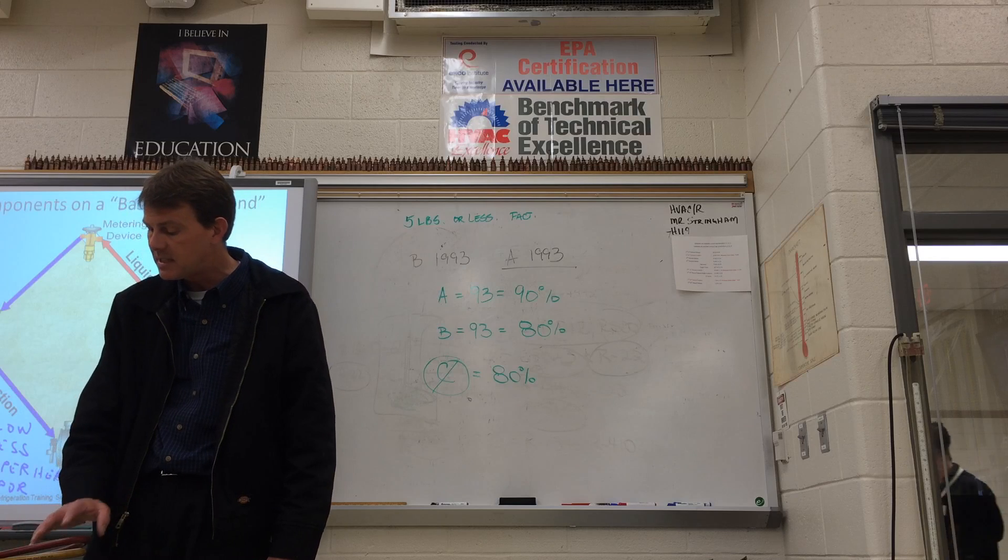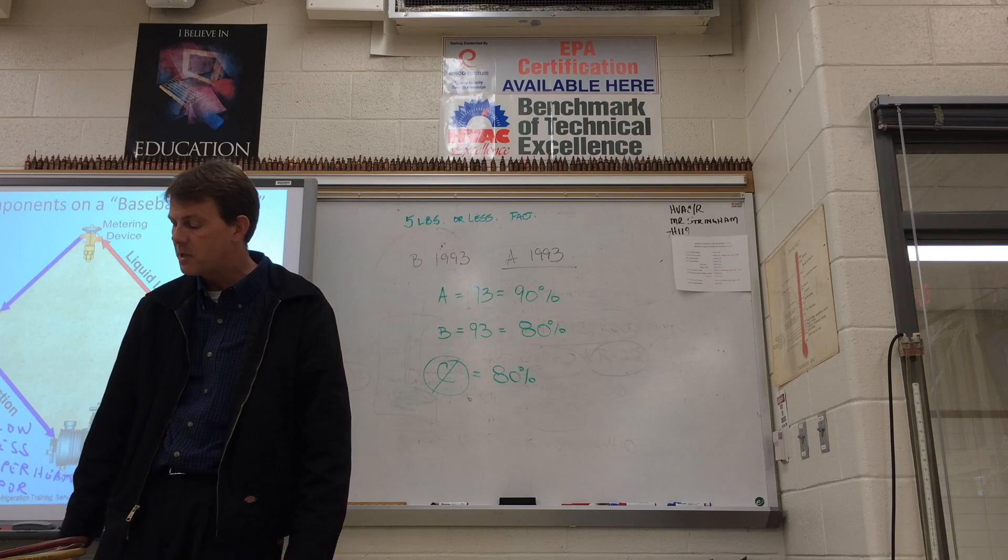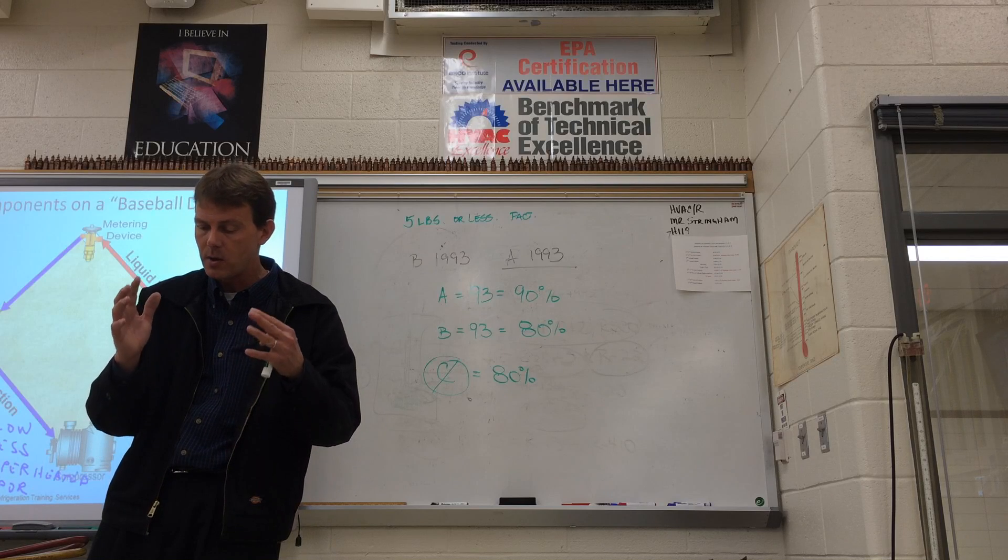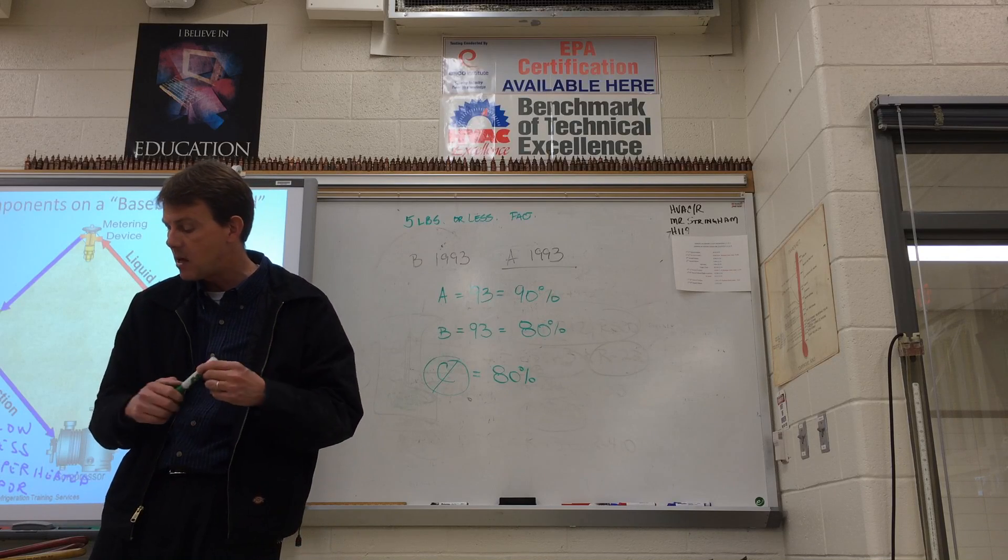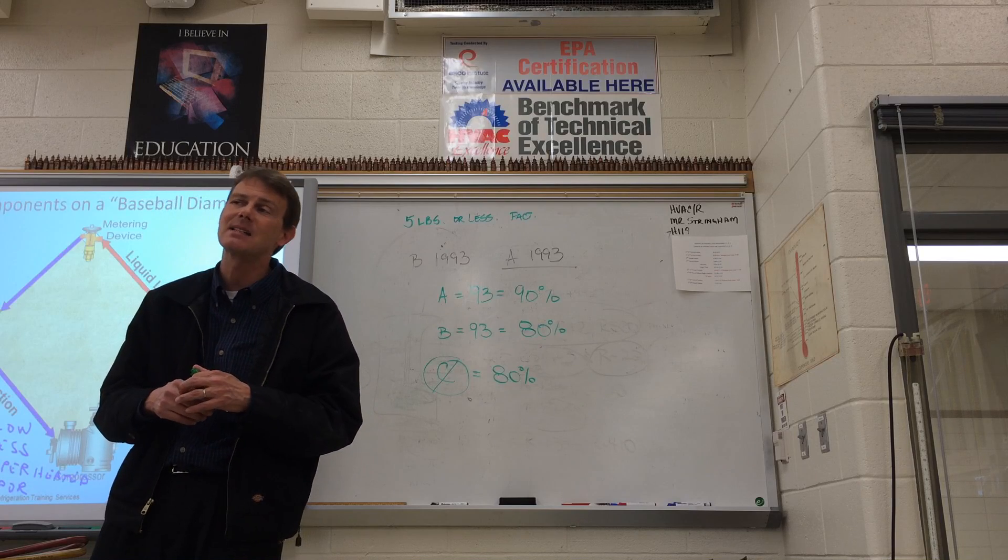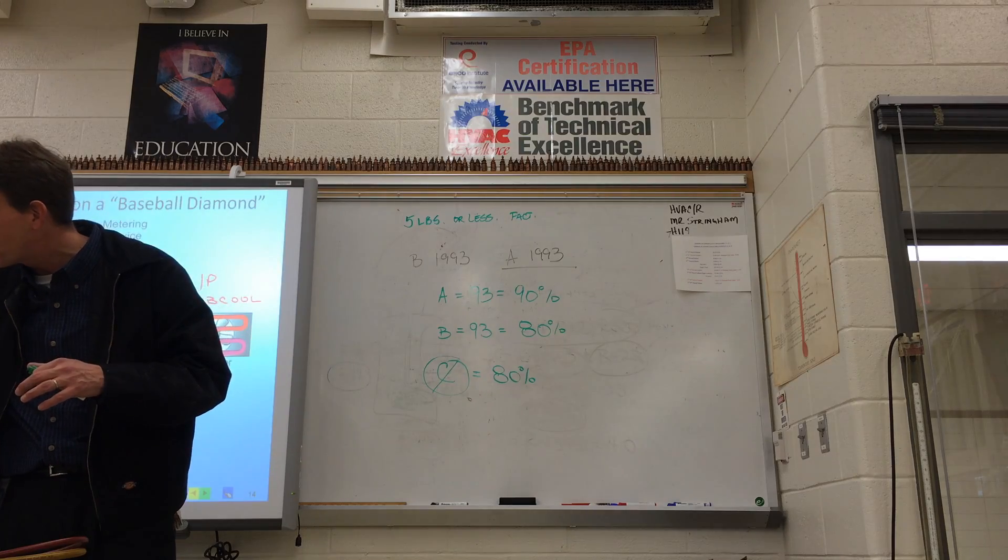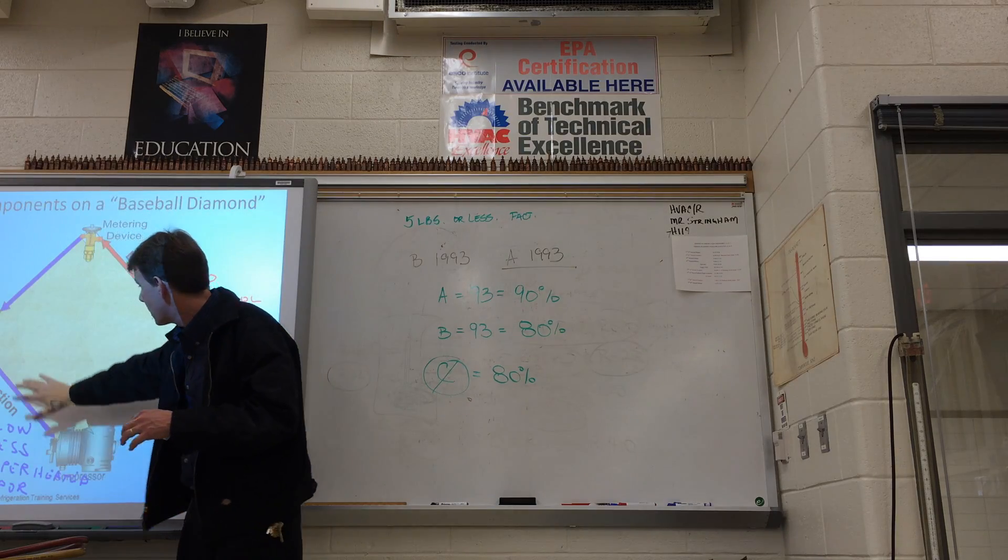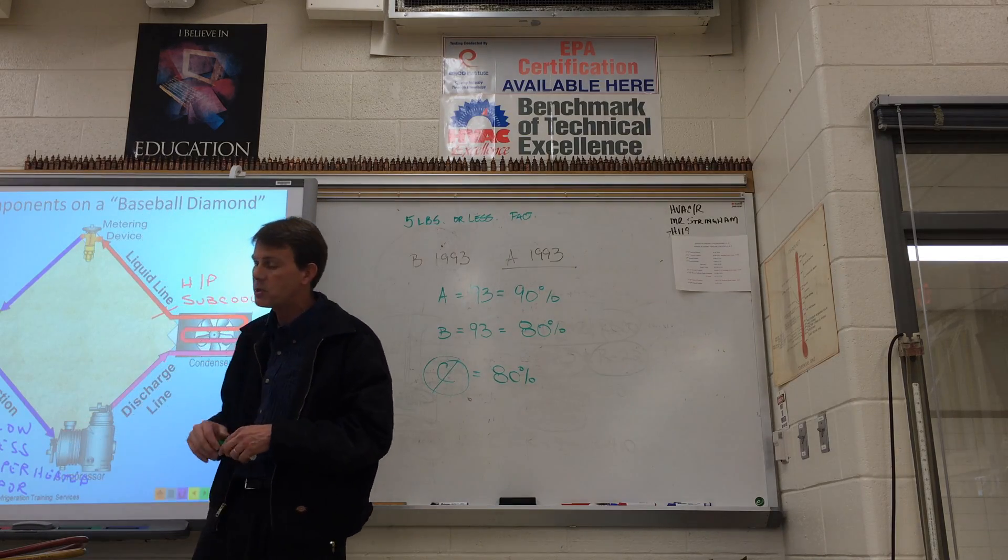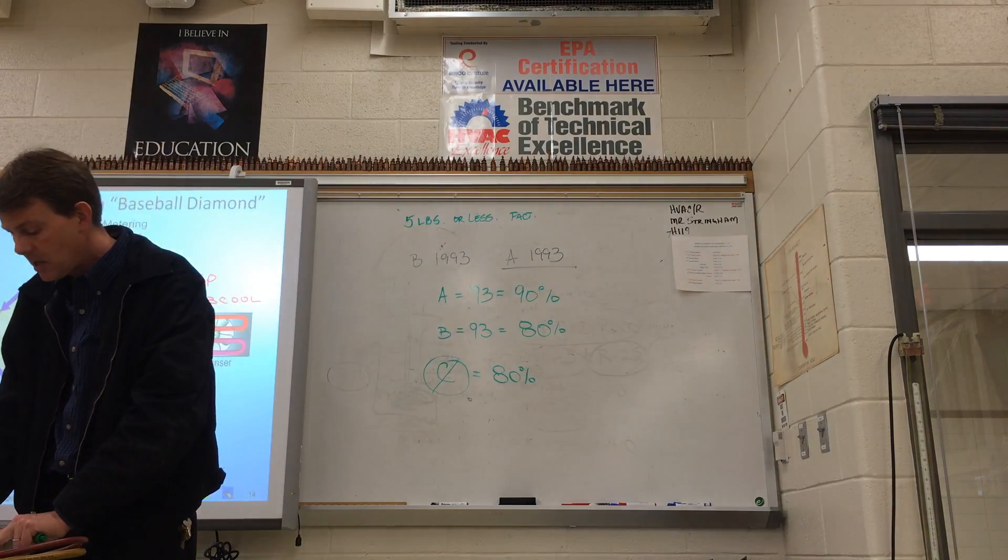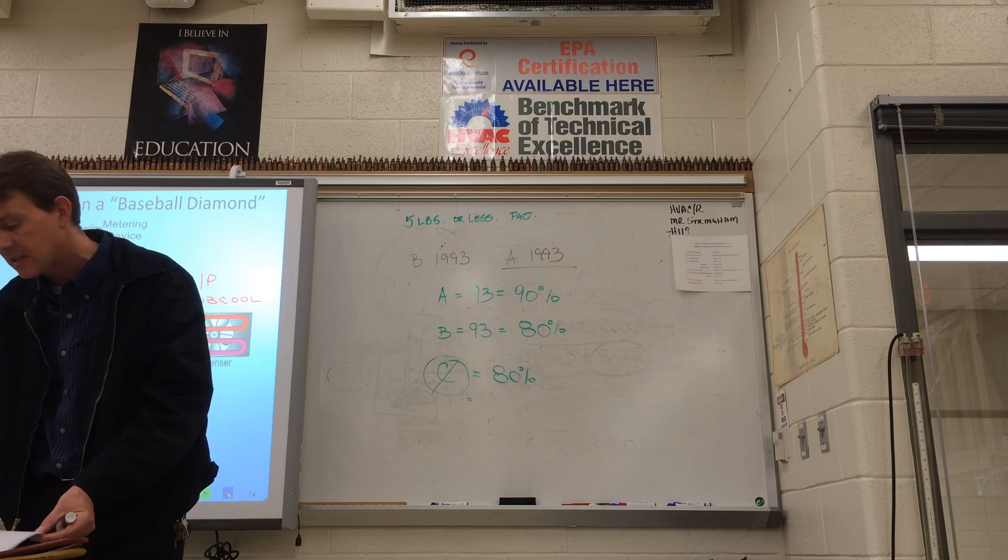You'll need to know that self-contained is active recovery. So self-contained, something's running. We're going to use the machine, the recovery unit, to suck the refrigerant out. System-dependent is passive, where the machine itself, the system machine, either the pressure in the refrigerant, or the compressor, if it's running, is going to push the refrigerant into a tank for us. So there's two types, self-contained, active, and system-dependent, which is passive.